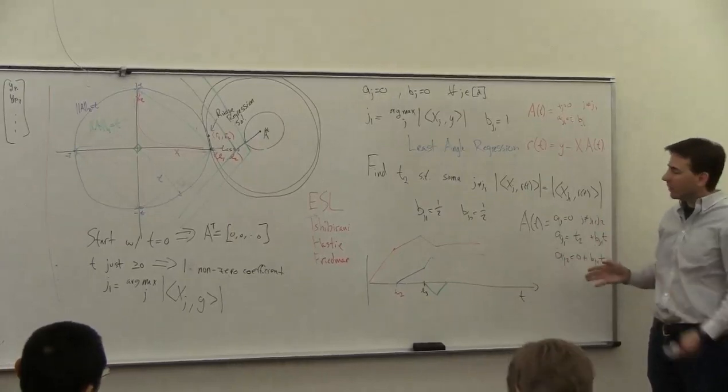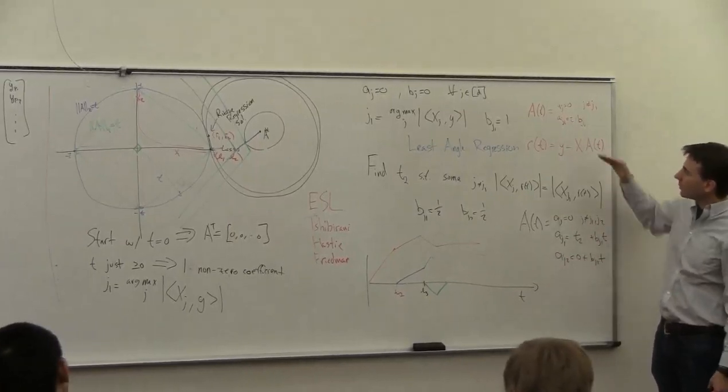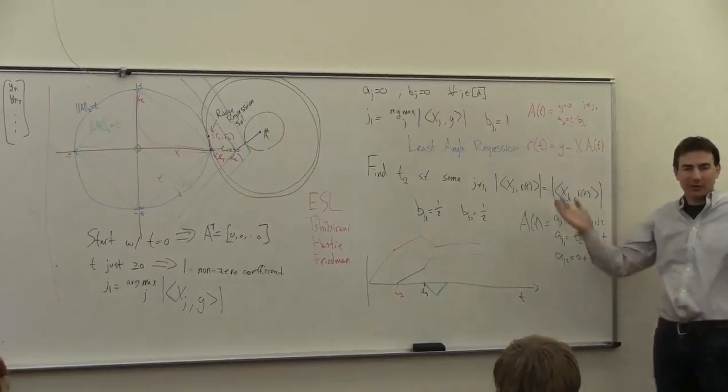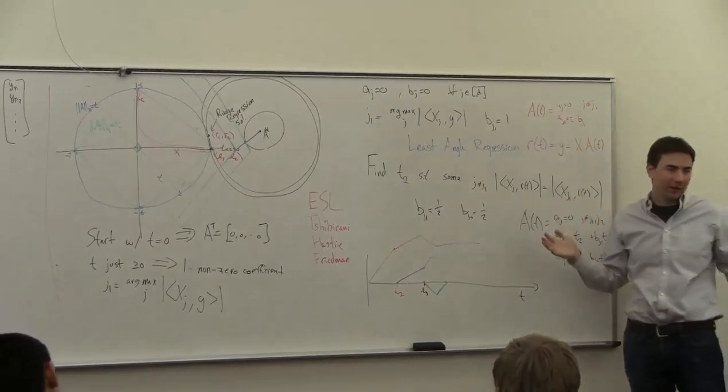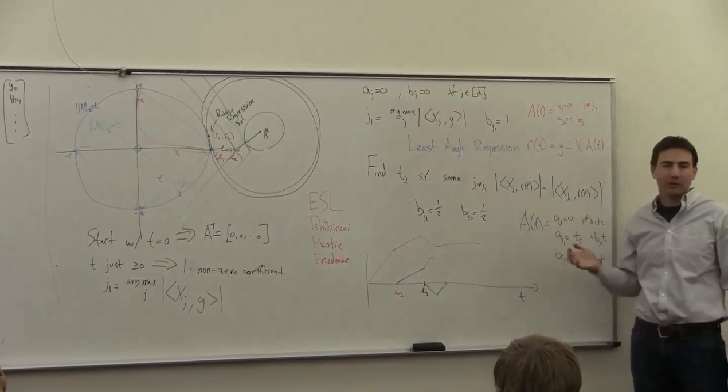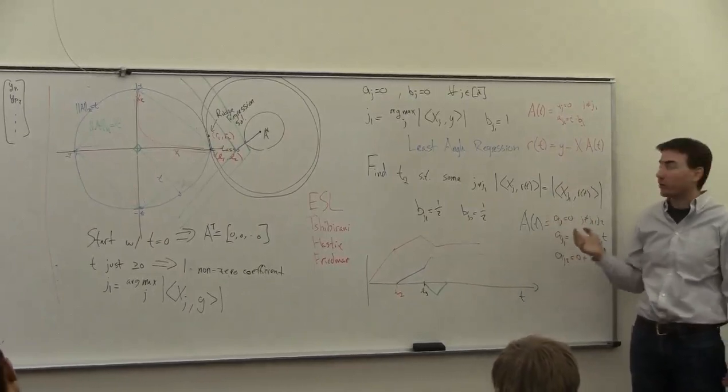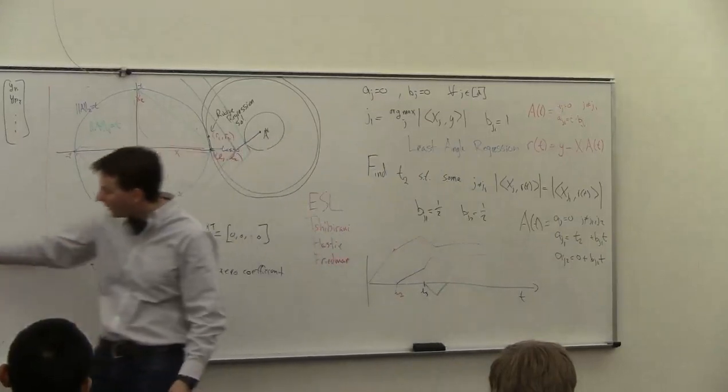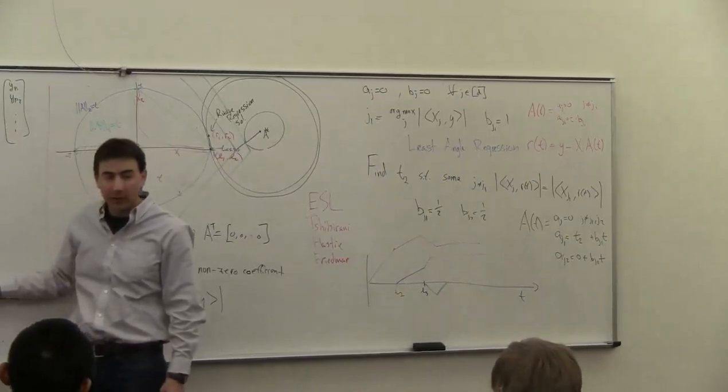It seems like we're almost done, except we've solved, we haven't returned one value of a, we've returned this continuum of all these values of it. How do we choose which value of a to actually return? And that corresponds to what is the right value of s, or correspondingly, the right value of t.